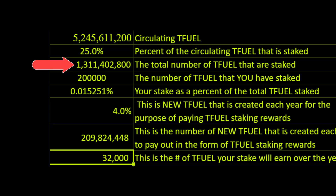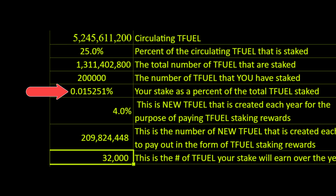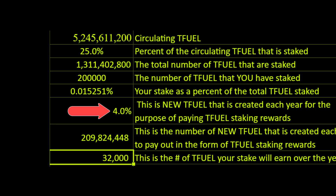The number immediately below it is simply the numeric representation of twenty-five percent of the total. So if you take one billion, three hundred eleven million, four hundred two thousand, eight hundred and multiply that by four, that gives you the total of five billion, two hundred forty-five million, six hundred eleven thousand, two hundred. This percentage here is the percentage of the total that your stake represents — in other words, zero point zero one five percent of the total equals your stake.